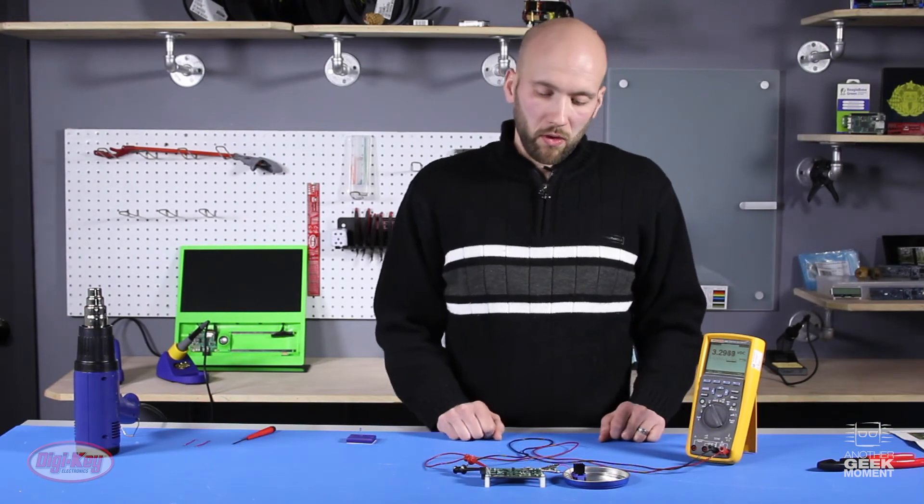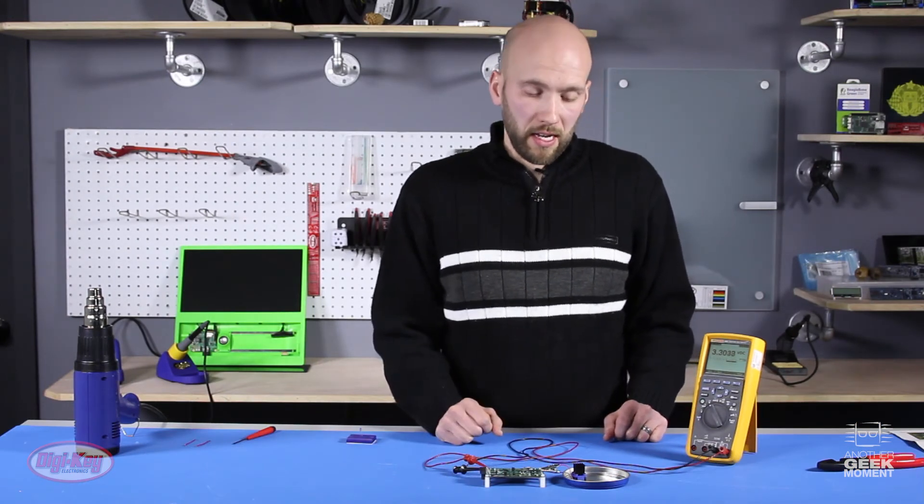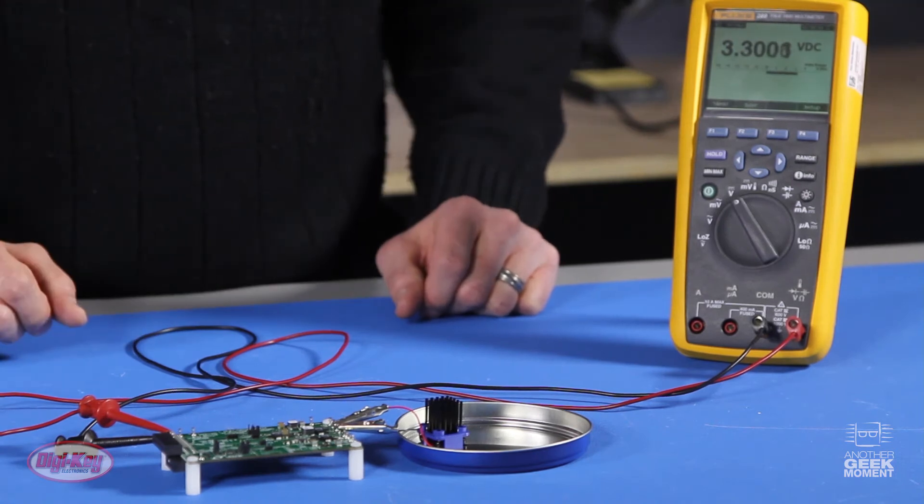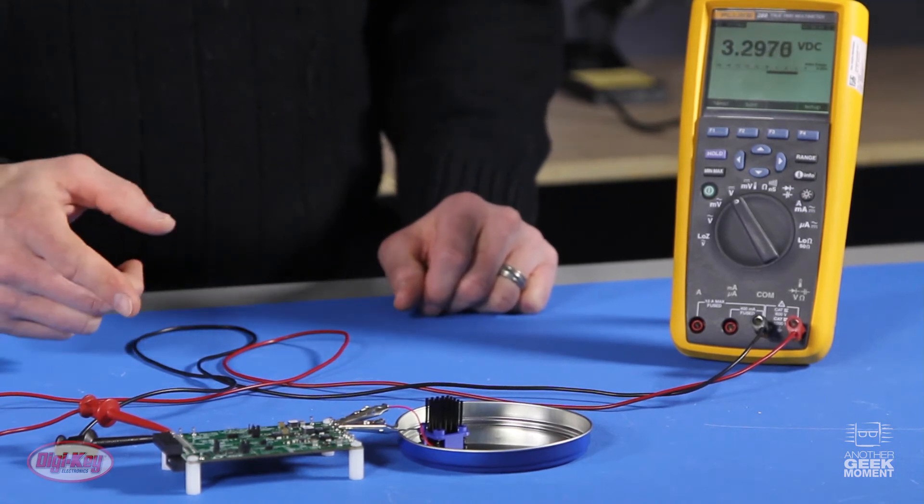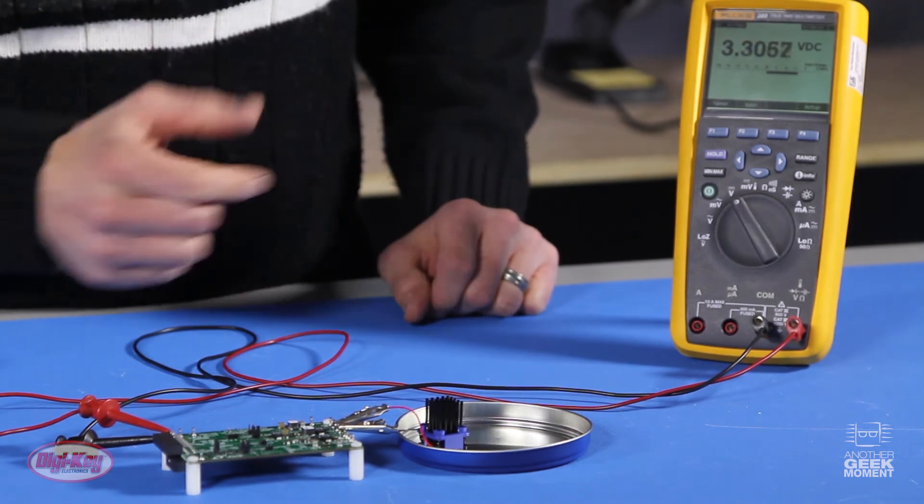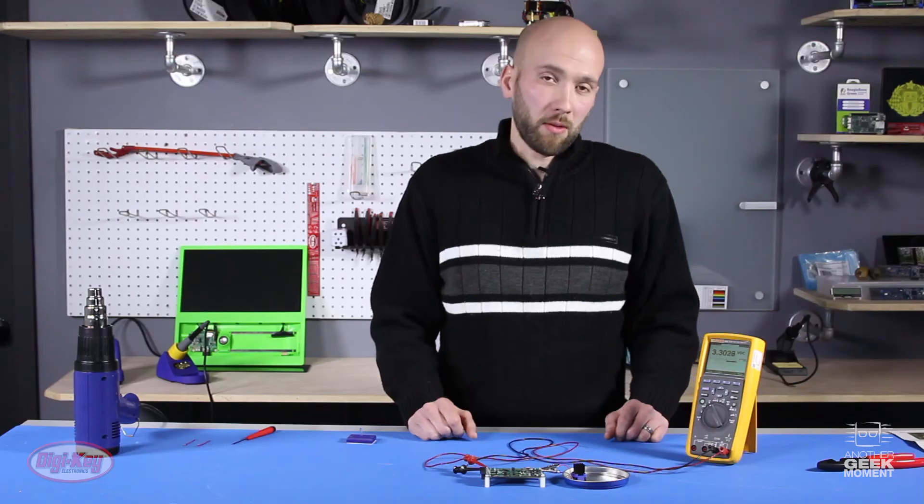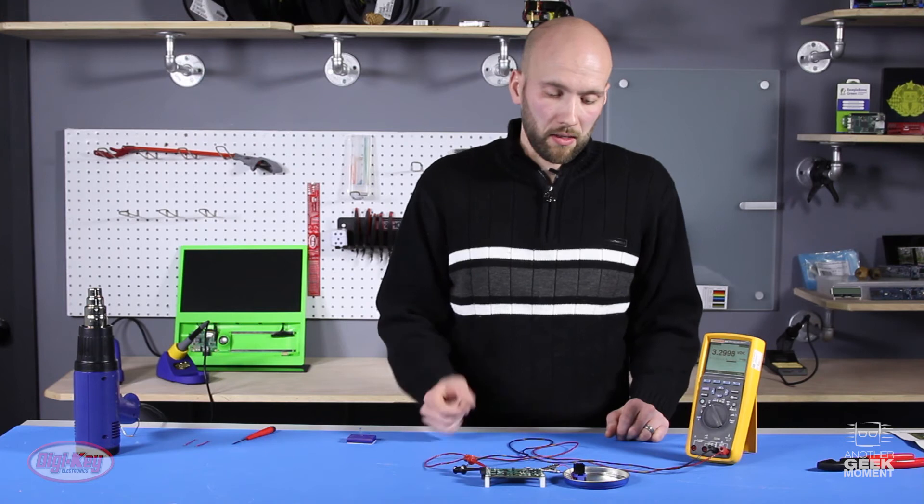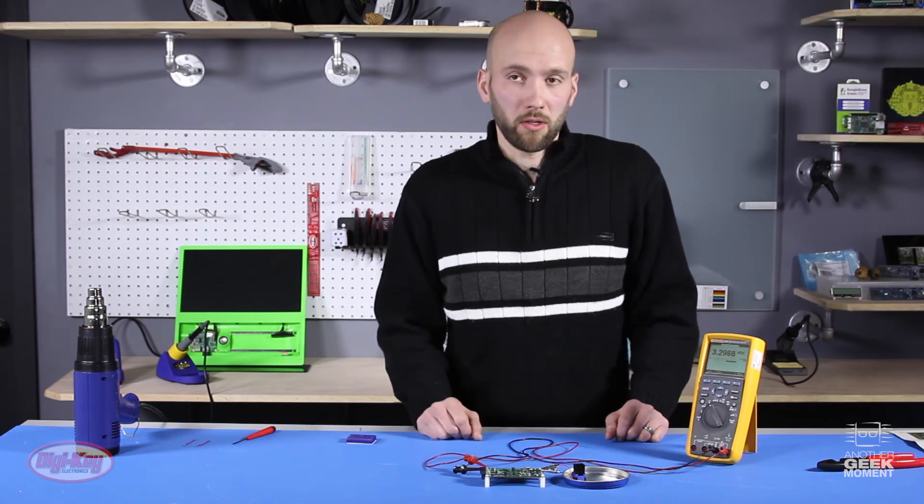If you're looking for voltage control on the output this board isn't necessarily the best for that. Once the module gets up to about 20 millivolts which is the minimum on this circuit you're gonna see the voltage climb on the meter and that'll stay at 3.3 volts once it gets there until the module cools and the capacitor drains.